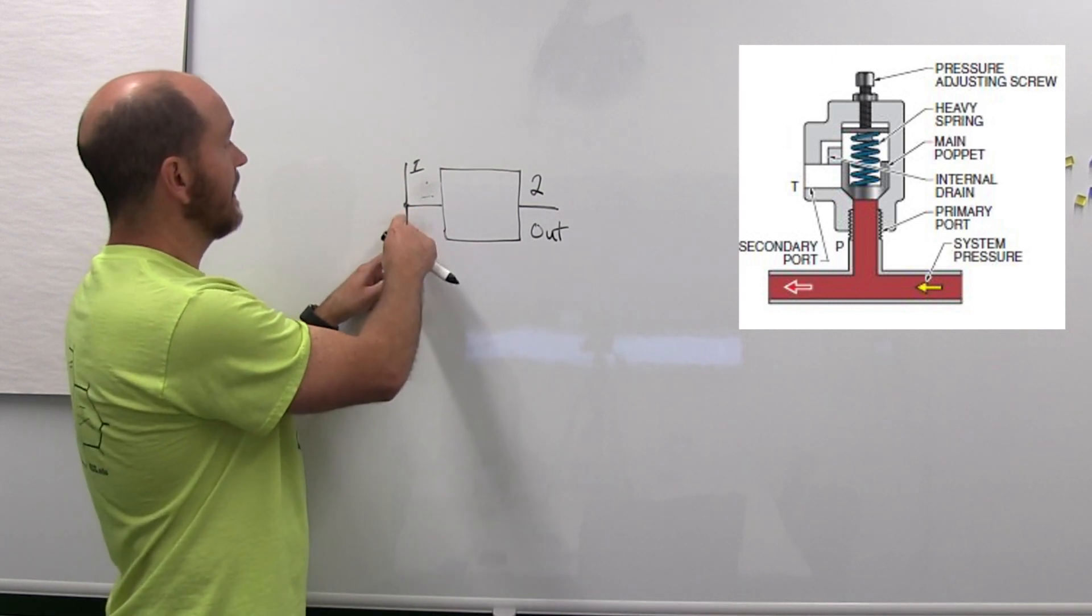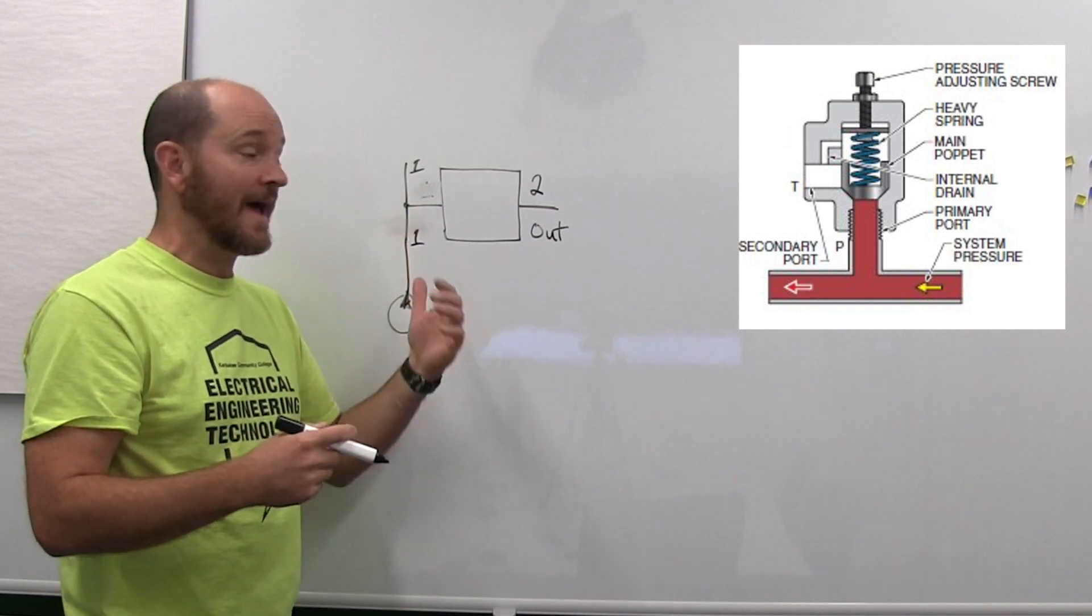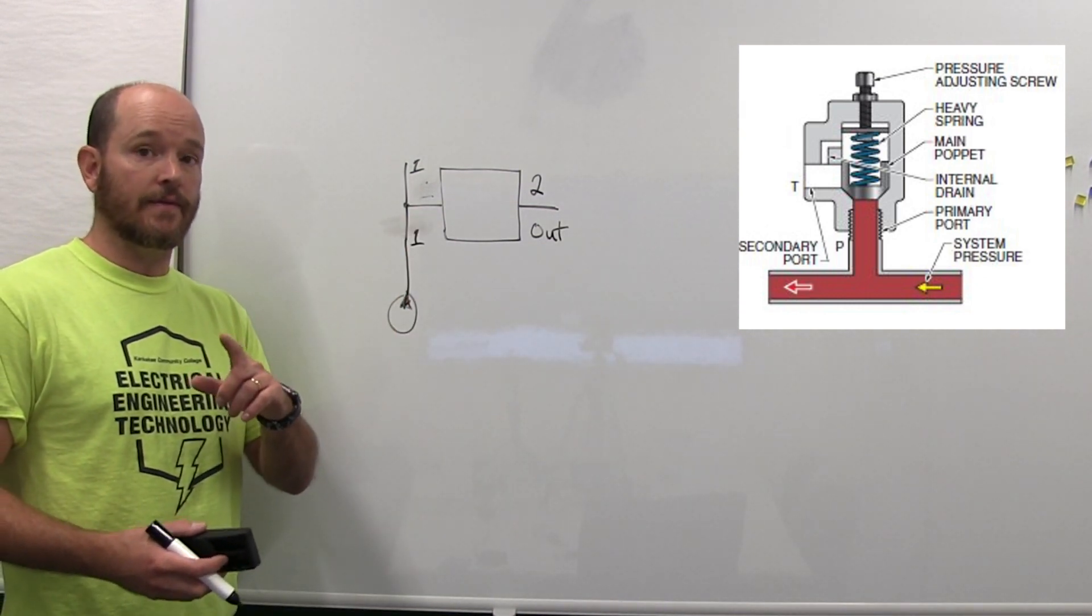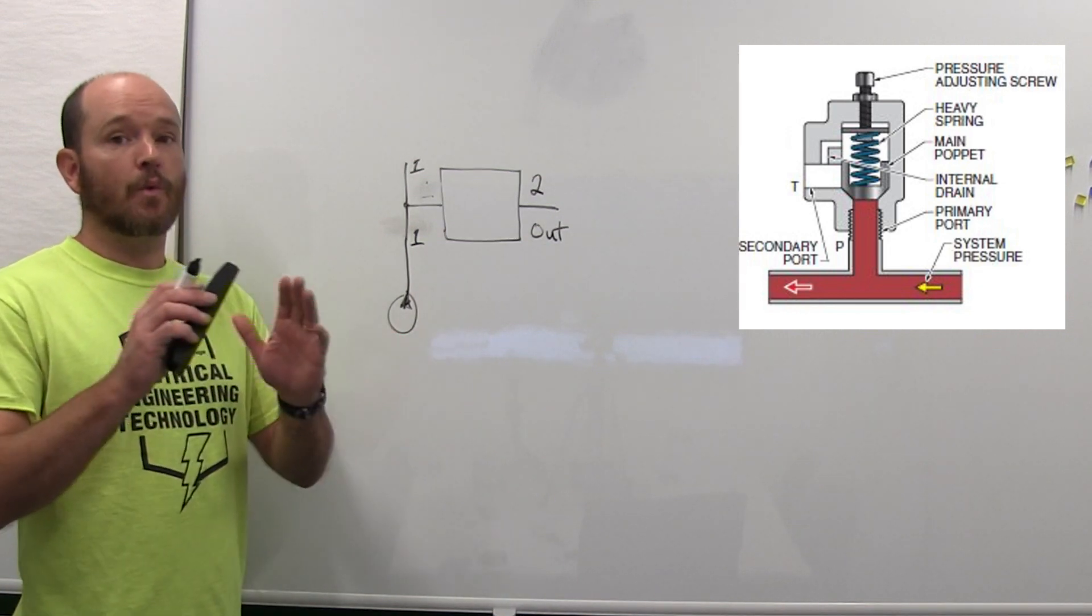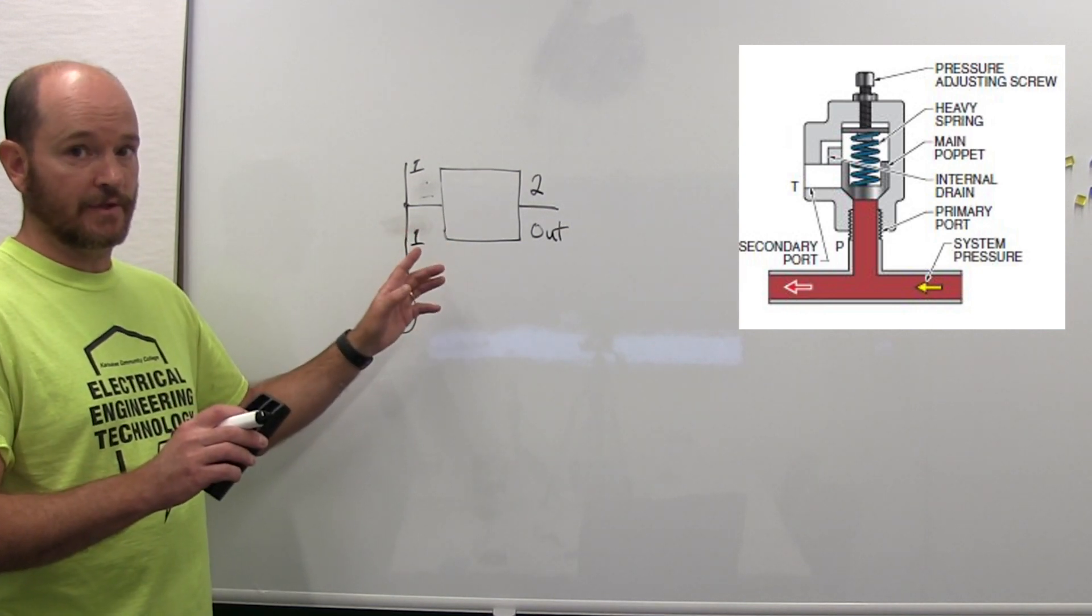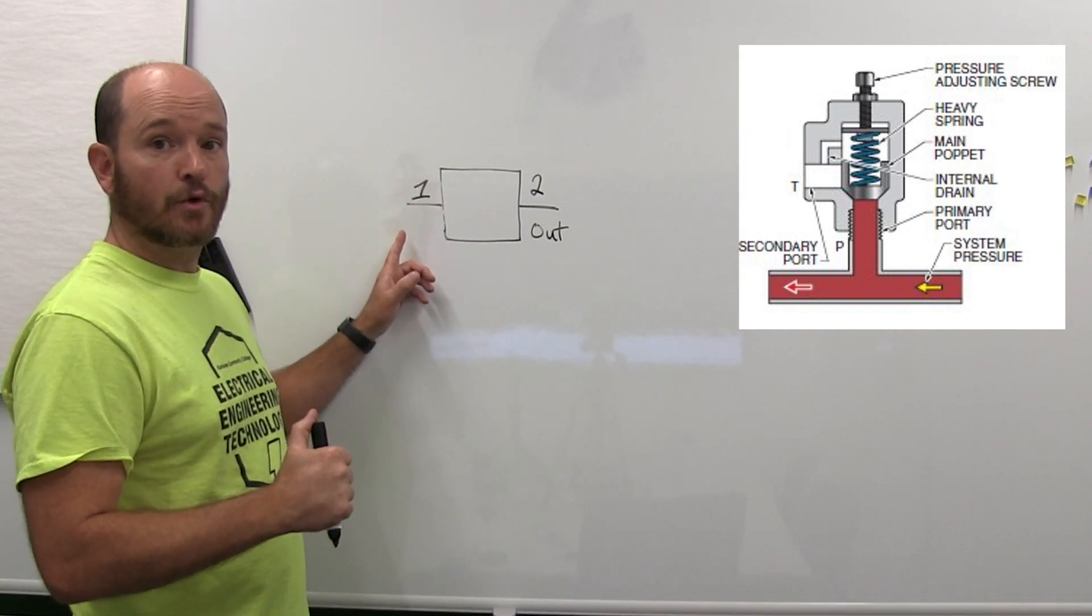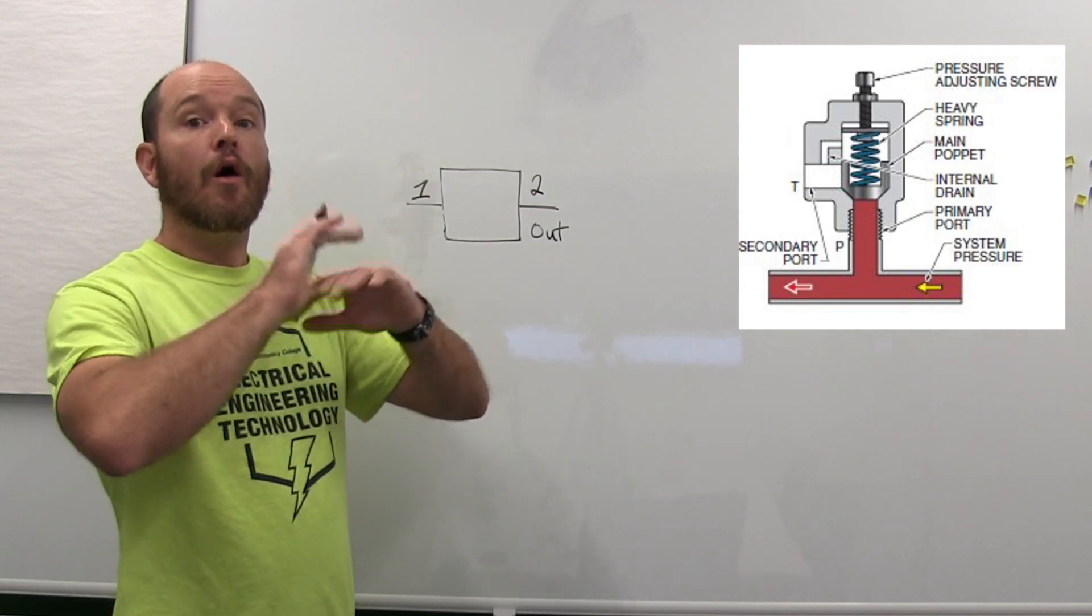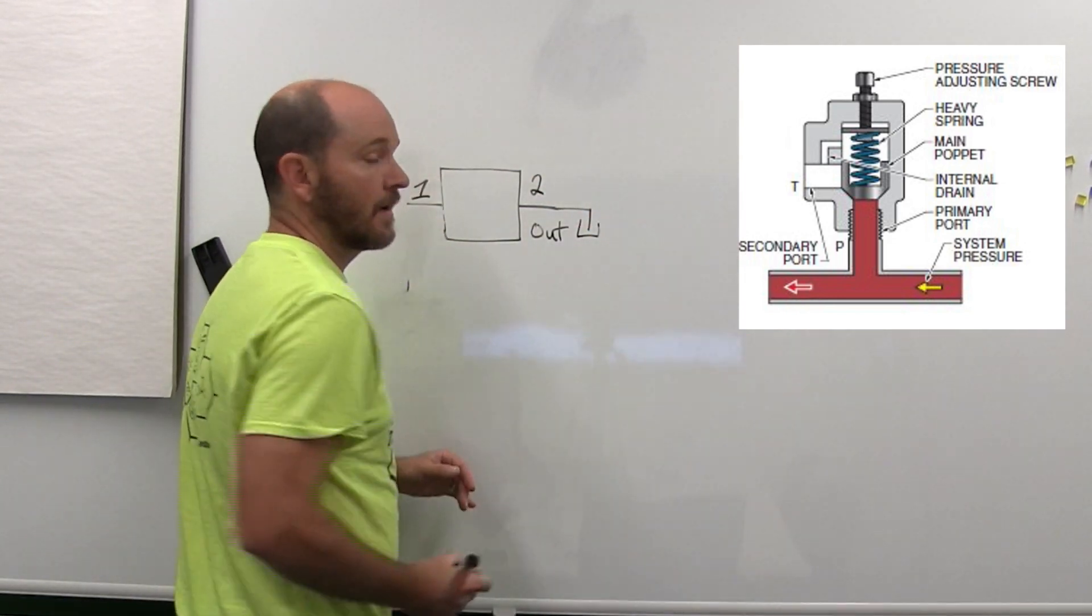If that's the case, this has a built-in T. Oil typically comes directly from the pump into one of the port ones and out the other port one. Other times there is an external T that is located there, so you have to compare the schematic diagram to the real world to know if the T is built into the relief valve or external.